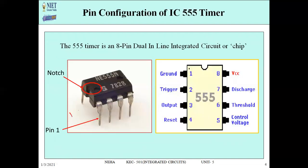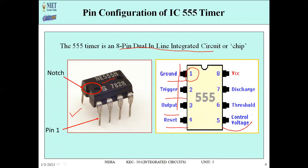The 555 timer IC, when you see it in the market, is an 8-pin IC. NE555N is written on this IC. It is an 8-pin dual inline integrated circuit or chip. We say dual inline because pins are on two sides only. The 8 pins are: pin 1 ground, pin 2 trigger, pin 3 output, pin 4 reset, pin 5 control voltage, pin 6 threshold, pin 7 discharge, and pin 8 VCC supply voltage.